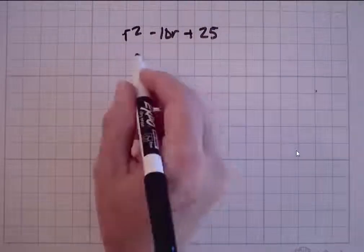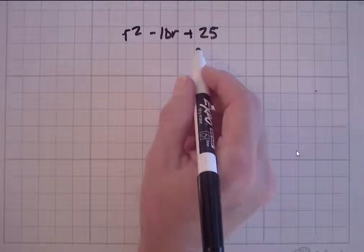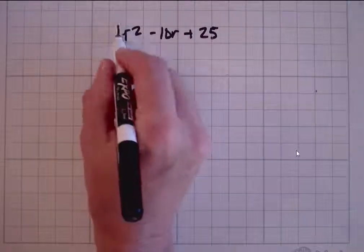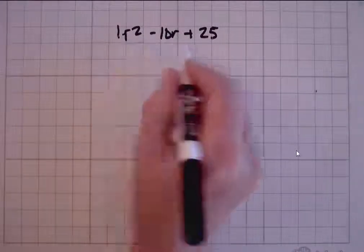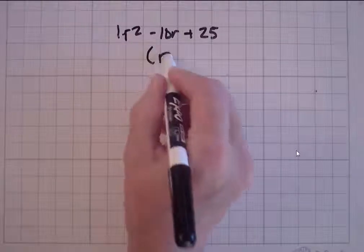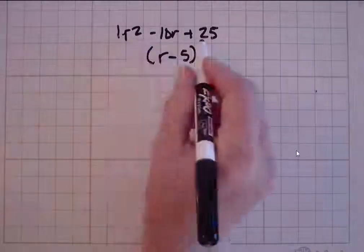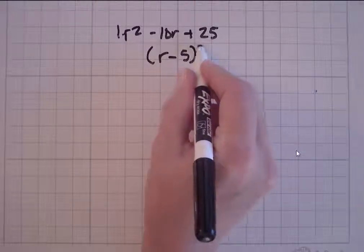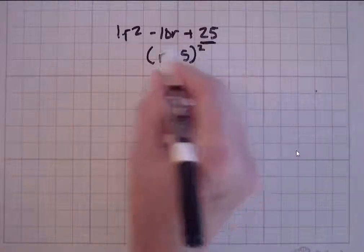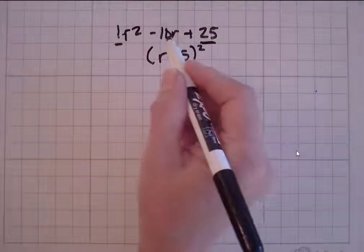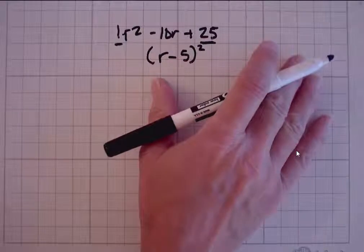Hopefully you remember that we talked about how important it is that you know what the perfect squares are. 25 is a perfect square, and the invisible number in front of the r squared, which is 1, is a perfect square. Since we have a perfect square and a perfect square, we know the easiest way to factor that is to take r minus 5, and that whole thing is squared, and you're done. But you have to recognize that this is a perfect square, and that 1 is a perfect square. So the first thing I want to do is remind you: memorize those perfect squares.